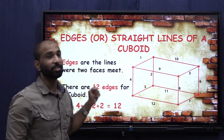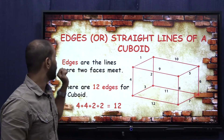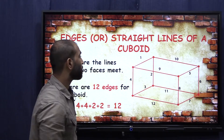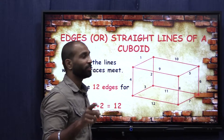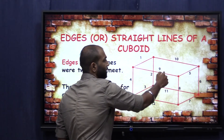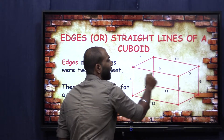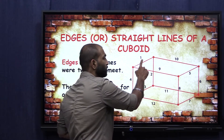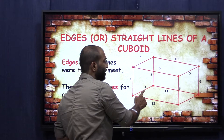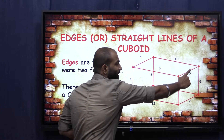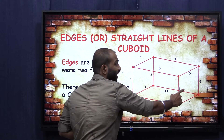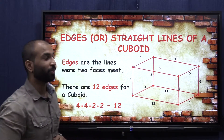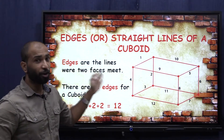Now edges. Edges are straight lines of a cuboid — an edge is the line where two faces meet. This is a face and this is a face; both of these faces are meeting at this line and that is known as an edge. Let's count: one, two, three, four, five, six, seven, eight, nine, ten, eleven and twelve. So there are twelve edges for a cuboid.